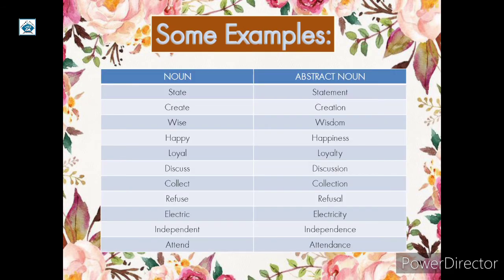Let's see some examples. In column 1 you can see the noun, and by adding a suffix, in column 2 you can see the abstract noun. First: state — we have added MENT, so statement. Create — we have removed E and placed ION, so creation. WISE — we have removed E and added DOM, so WISDOM.